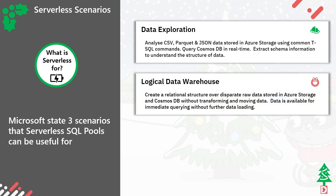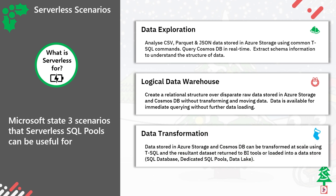Number two is the logical data warehouse. We can create views and external tables to cast structure over data from disparate sources — imagine several external data sources brought together with structure in a single database. And lastly, data transformation: we can use the power of serverless SQL pools to do the processing, for example aggregating large data sets into smaller ones. A good use case is Power BI connecting to serverless SQL pools, allowing it to do the crunching and aggregating of large data sets.